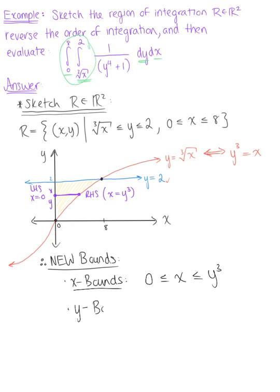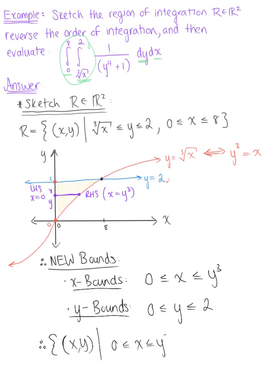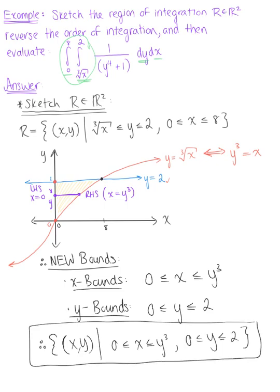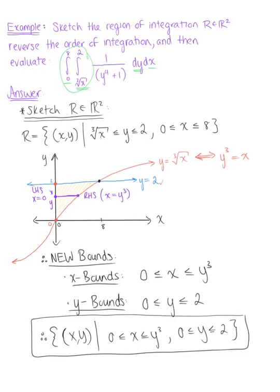For the y bounds, we look at the y-axis to identify the largest and smallest y values. The smallest y value is 0, and the largest is 2. So y is greater than or equal to 0 and less than or equal to 2. Therefore, our new region of integration R is the set of all ordered pairs (x, y) such that x is between 0 and y cubed, and y is between 0 and 2. We are now ready to integrate using the order dx dy.